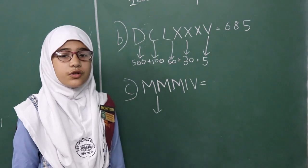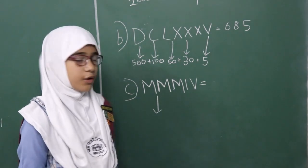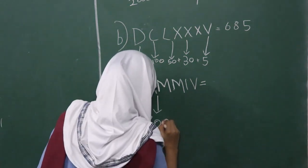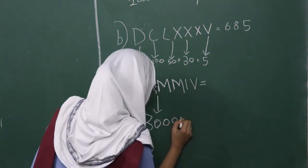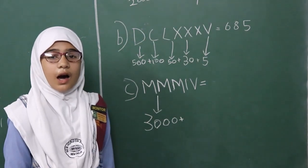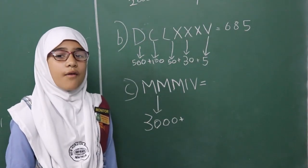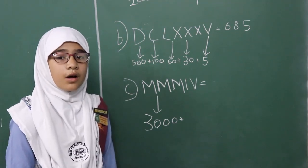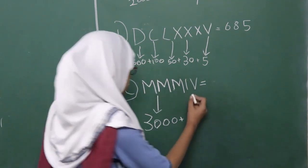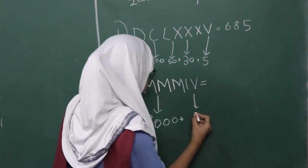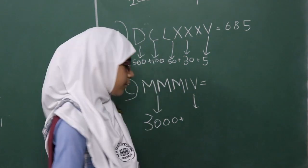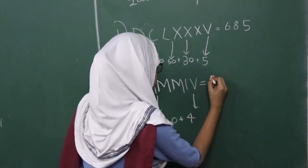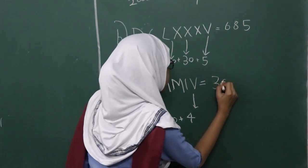M is one thousand, so three M's are three thousand. I and V make four, because when a smaller number comes before a greater number, we subtract the values — V is five and I is one, so we subtract one from five to get four. The answer is three thousand and four.